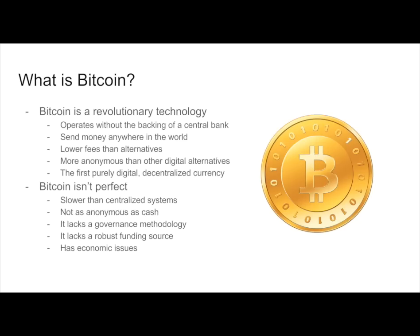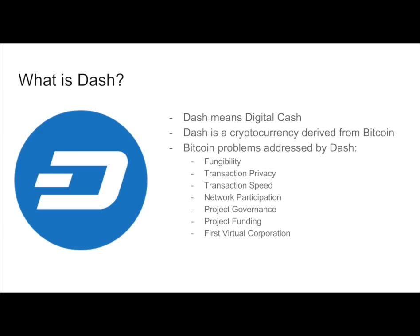Some of the issues with Bitcoin are that it is slower than centralized systems and it lacks some things that centralized corporations do really well, like having a governance and management methodology plus a funding source that's recurring and stable. On top of that it has a lot of economic issues, and we strive to solve all of these issues within Dash.